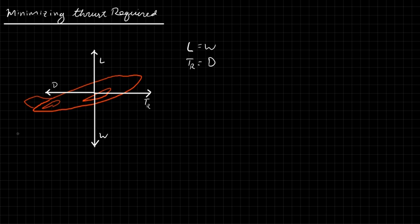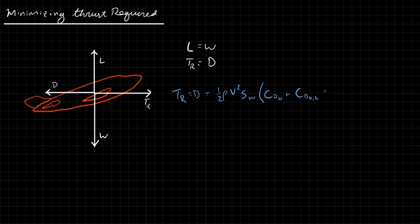If we want to minimize thrust required, we need to minimize the drag on the airplane. Thrust required, which equals drag, is one-half rho v-squared S_w times the drag coefficient. The drag coefficient is parabolic with the lift coefficient: C_D = C_D0 + C_D0L times C_L + C_L-squared over (pi e RA), where e is the Oswald efficiency factor.